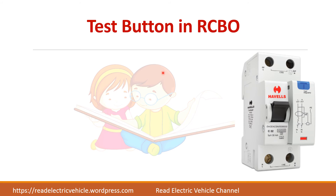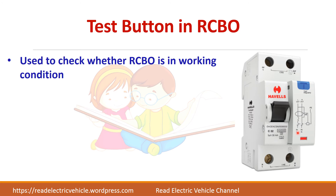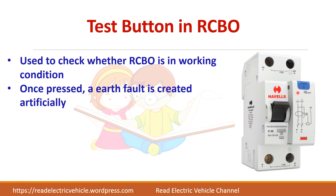Next, we will see about the test button in the RCBO. The test button, marked T, is used to check whether the RCBO is working or not. When you press it, an earth fault is artificially created and the RCBO should trip. If it doesn't trip, it is time to replace the RCBO.